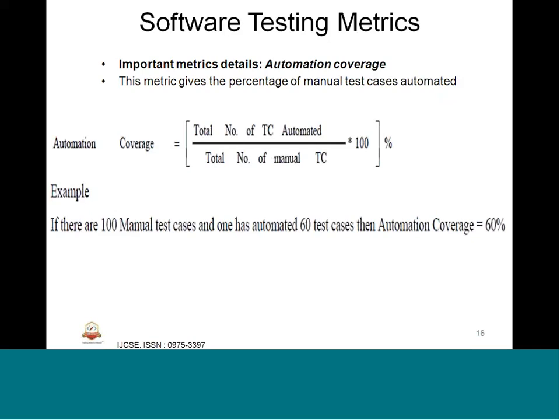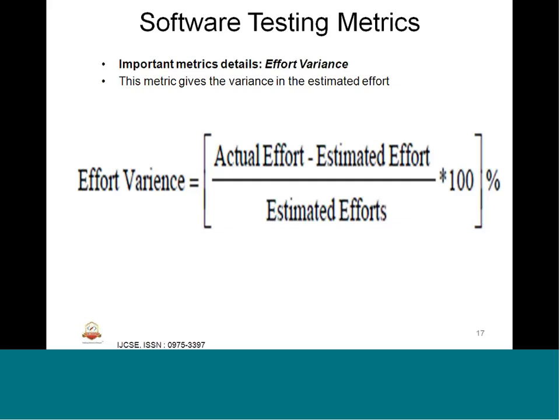Automation coverage is also an important metric. It gives the percentage of manual test cases that have been automated. Since testing cannot be done 100% by automation, there is a mix of automated and manual testing. Automation coverage = (total number of test cases automated ÷ total number of manual test cases) × 100. For example, if there are 100 manual test cases and 60 have been automated, the coverage is 60%.